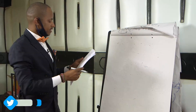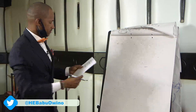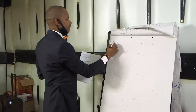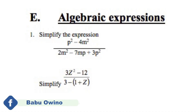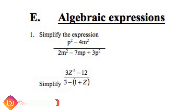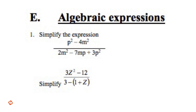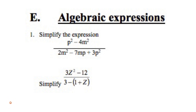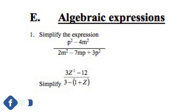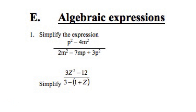We go to algebraic expressions. Question number nine: p squared minus 4m squared, divide by 2m squared minus 7mp plus 3p squared. When we are solving this algebraic expression, you look at the numerator and then you look at the denominator. We can see the numerator is a difference of two squares.